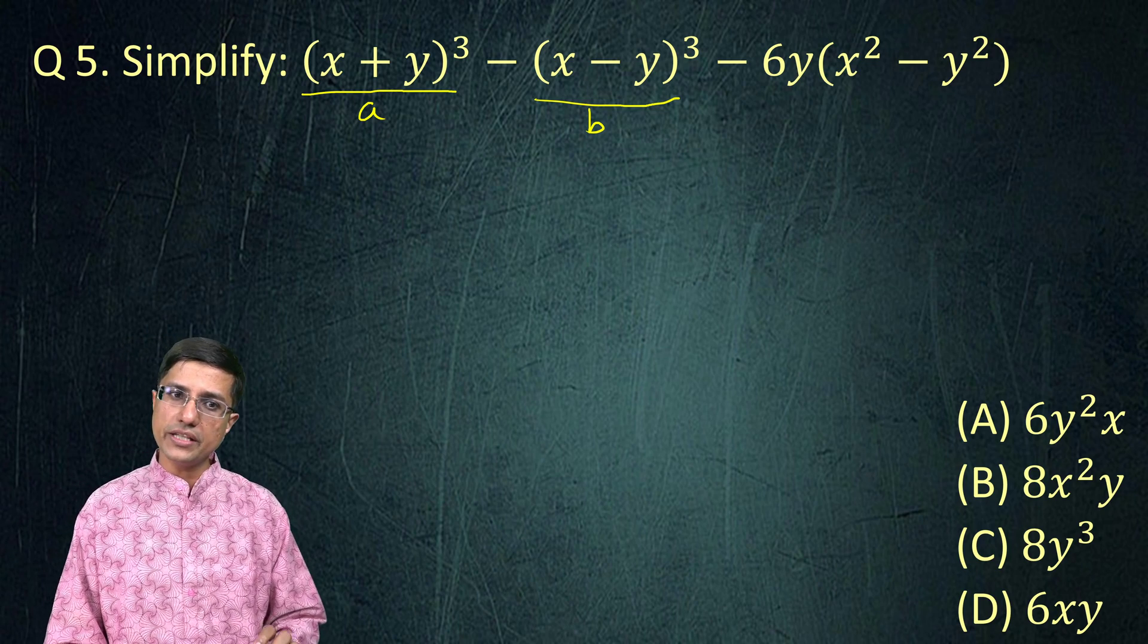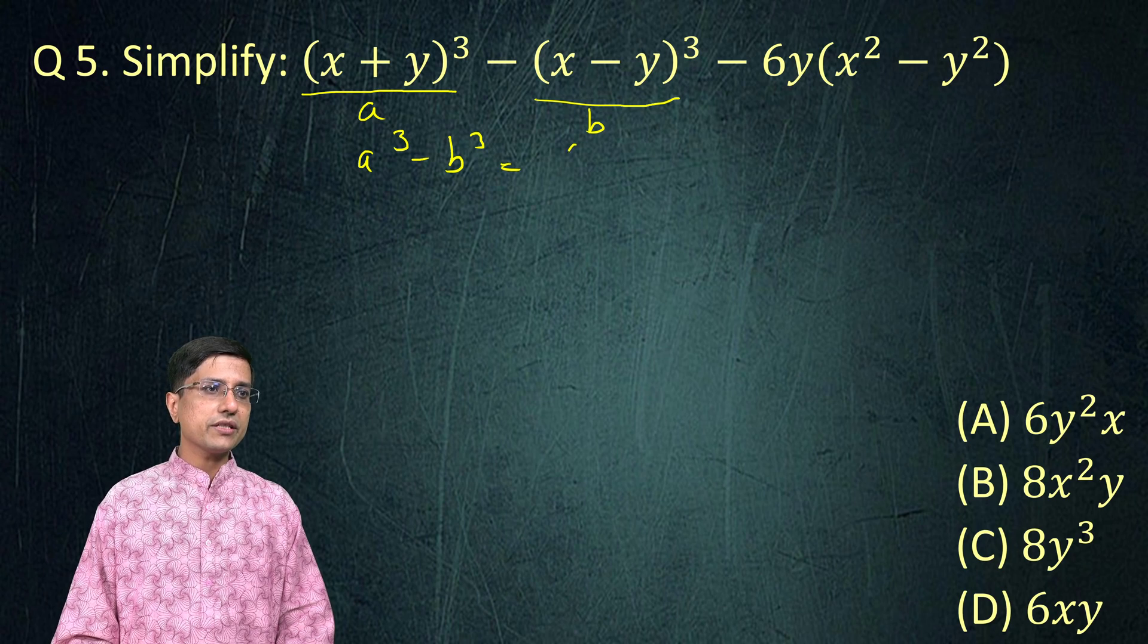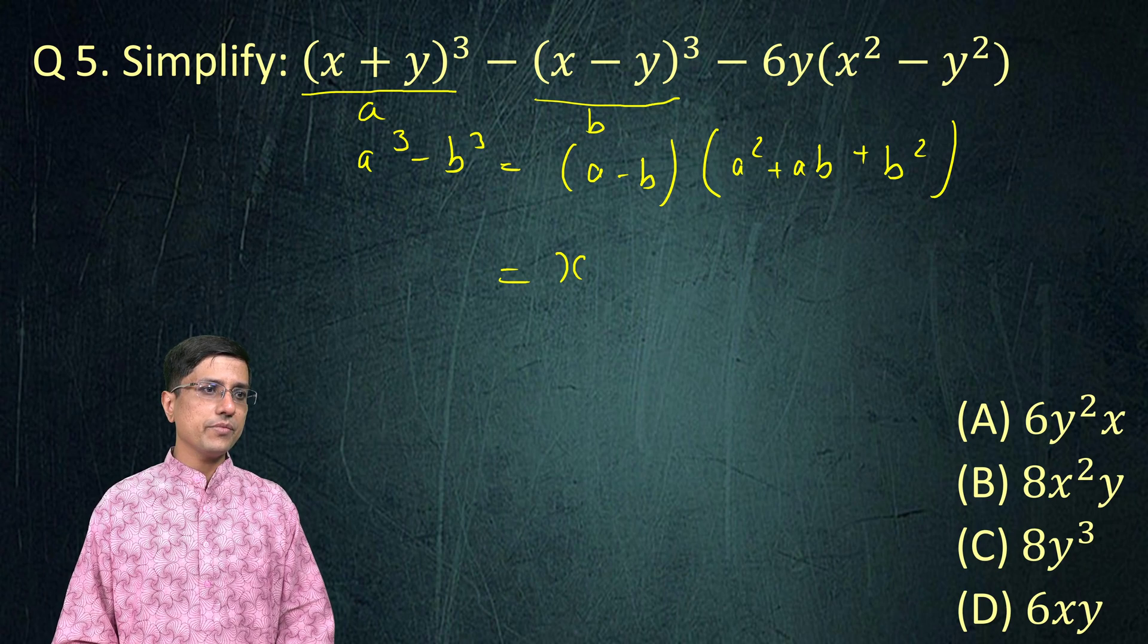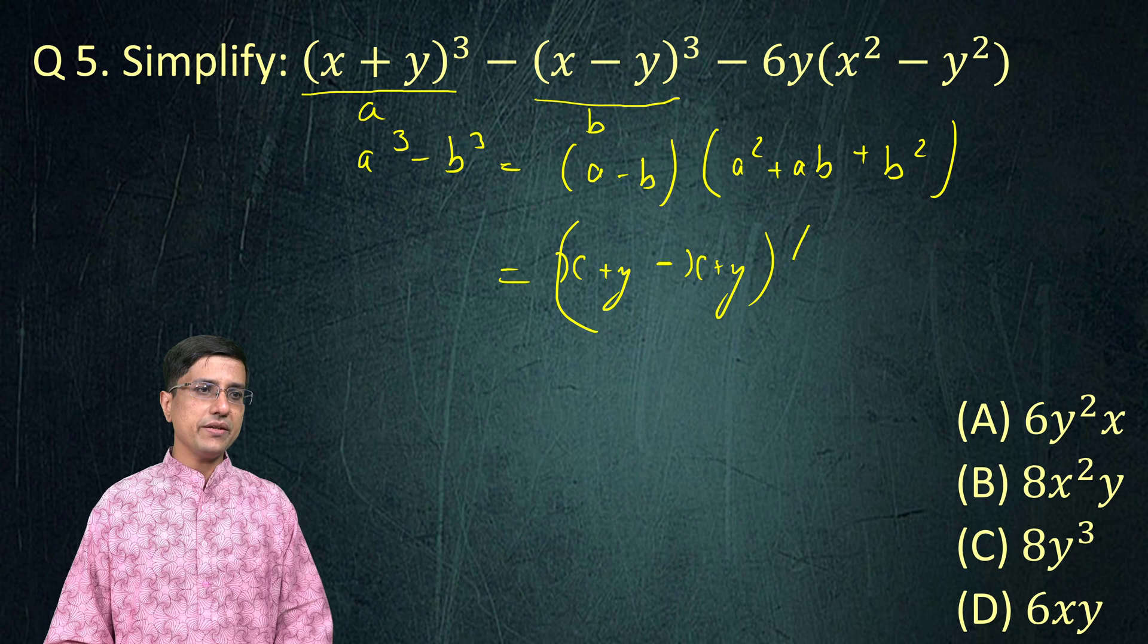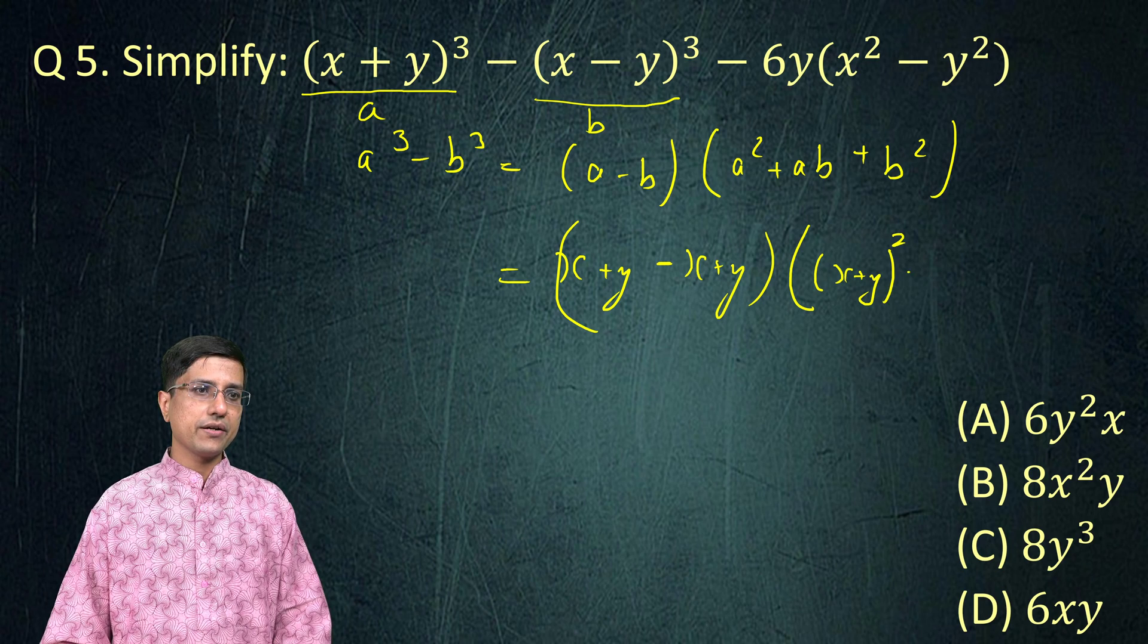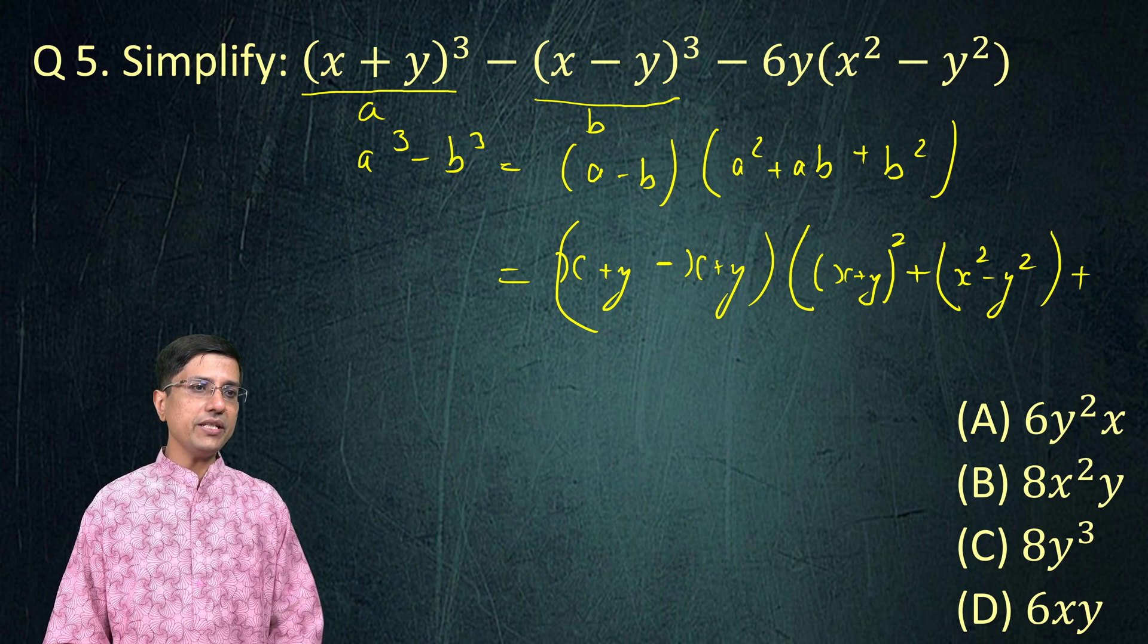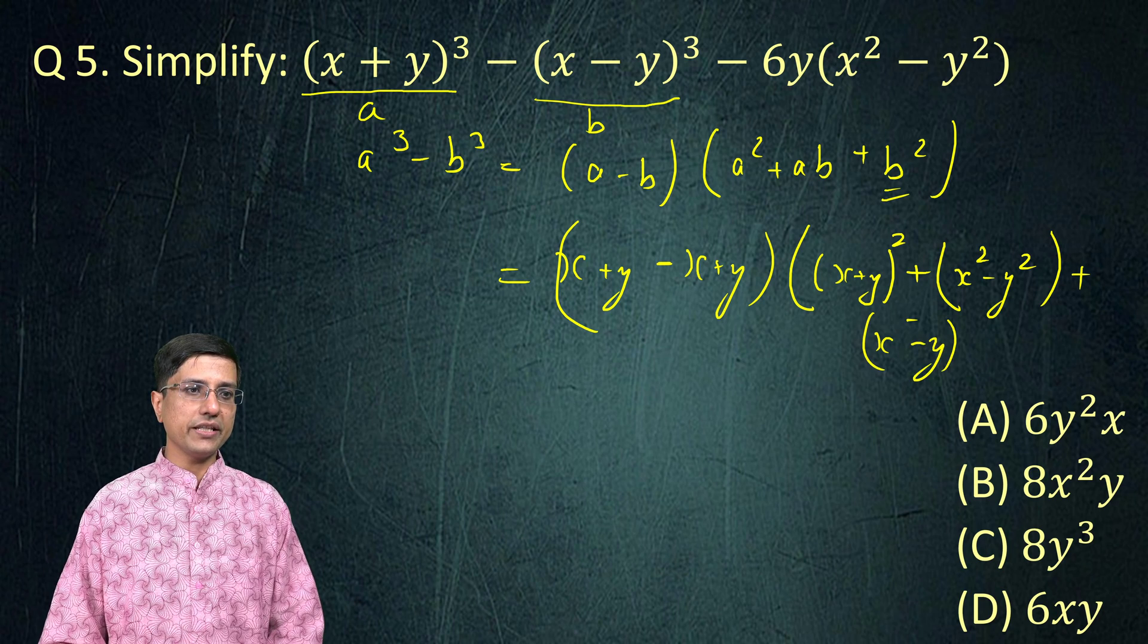And then one thing I can see is this is a³ - b³, which is nothing but (a - b)(a² + ab + b²). I substitute the values. a - b is nothing but (x + y) - (x - y) and then a² + ab. I will write that further. a is (x + y)² + (x + y)(x - y), which is (a + b)(a - b). So, that is x² - y² plus the last term is b². So, b² is (x - y)².